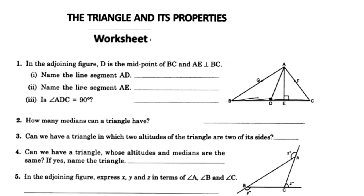A is perpendicular to BC. The line is perpendicular to BC at 90 degrees. If you look at AD, you will find the names of the line segments.